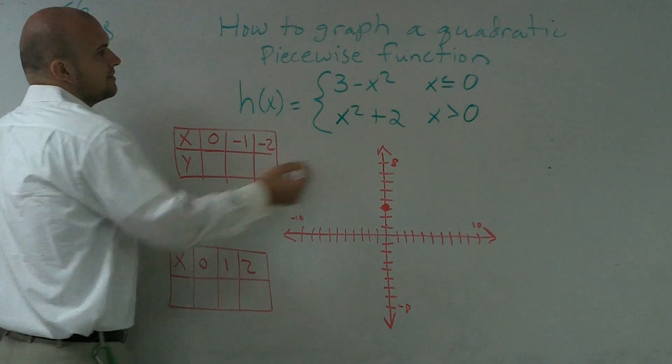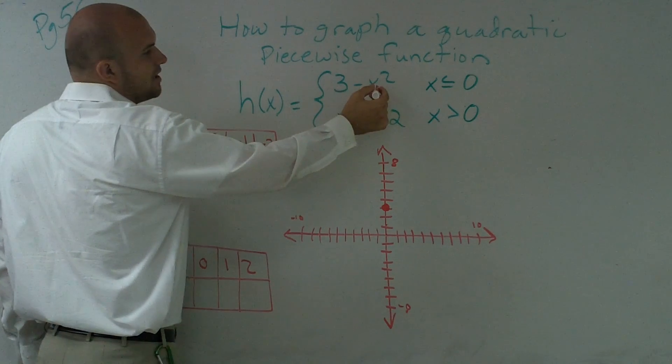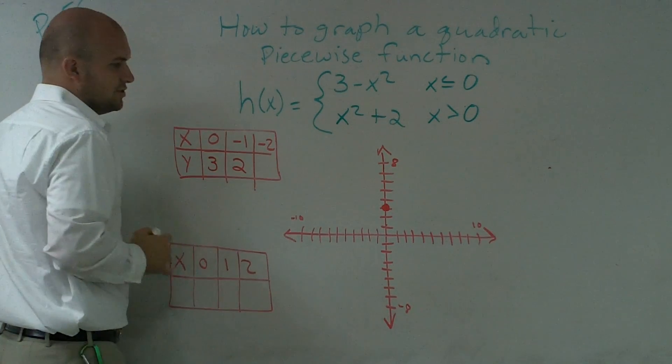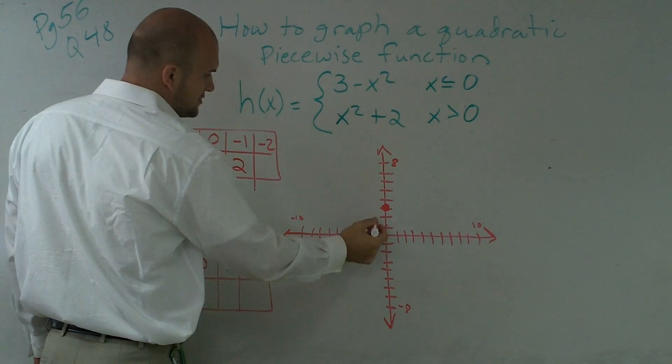Then I plug in negative 1. Negative 1 squared is going to become 1. 3 minus 1 is 2. So I go to negative 1, up 2.